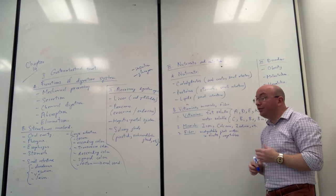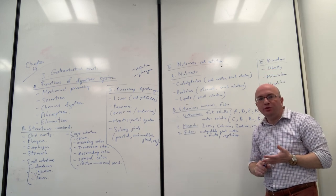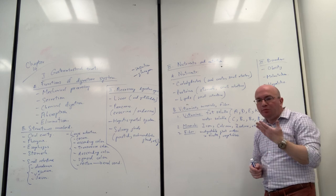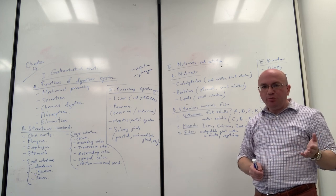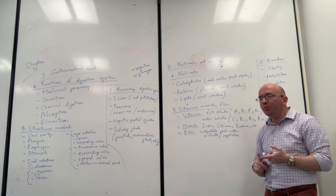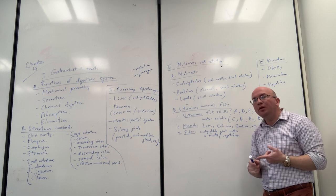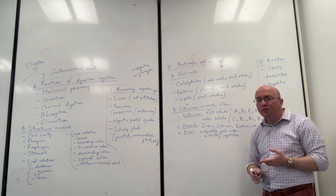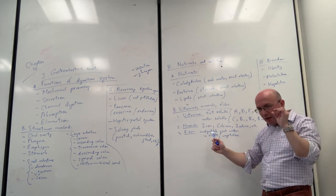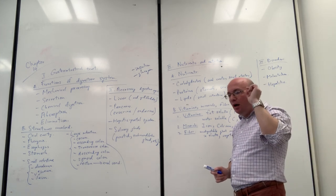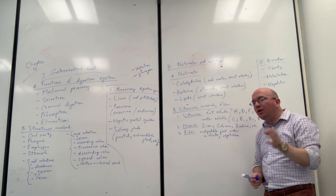Fiber is the indigestible plant material — basically the cell wall of plants. When you eat enough fruits and vegetables, this indigestible material passes through your digestive tract quickly, allowing waste to be removed successfully and preventing constipation. The only way to get fiber is through eating fruits, vegetables, and cereals. Even though we are not actually absorbing the fiber molecules ourselves, fiber promotes faster transit and carries waste out of the body.